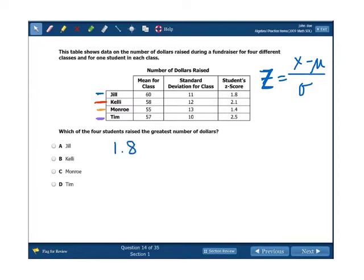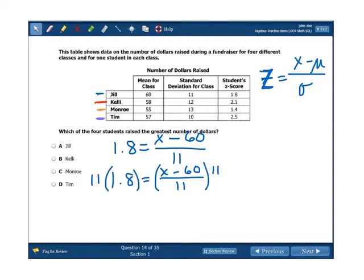Alright, so for Jill, her Z-score was 1.8. We don't know X because then that's what we're finding, minus the mean for her class divided by the standard deviation for her class. And we're going to solve this equation by starting off with multiplying both sides by 11. So 1.8 times 11. The 11s cancel, which was the whole point of doing that. And we're going to add 60. We're going to get 79.8. So Jill's actual amount of money raised was $79.80. Go through and find it for Kelly, Monroe, and Tim. And I'm going to pause it and write it out myself.